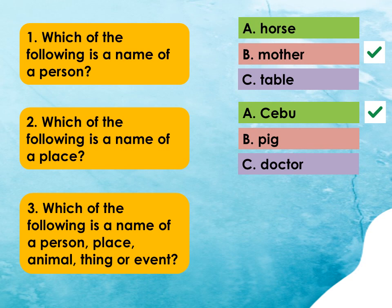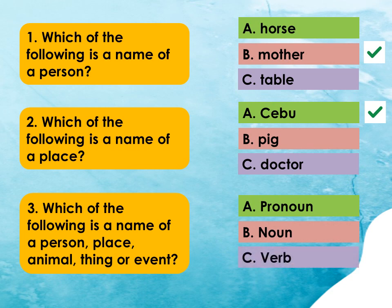Number 3: Which of the following is the name of a person, place, animal, thing, or event? A. Pronoun, B. Noun, C. Verb. That's correct! It's B. Noun. Great job, kids!